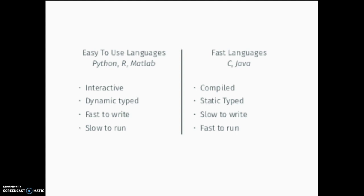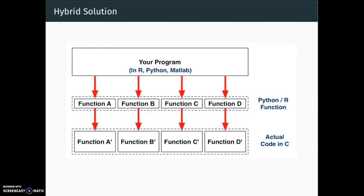By contrast, the fast languages — while awful to work with — run at much higher speeds. The strategy most people have used for the last decade is a hybrid approach: we work in R, Python, or MATLAB, and call functions that are ostensibly in Python, but when you look at those functions, all you're actually doing is calling a C library. Most of the tools we use when working in R or Python are actually C libraries underneath.